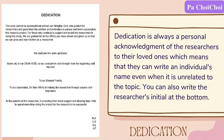The last lesson for the third quarter is lesson 5: the making of Chapter 2, or the Review of Related Literature. Literature refers to published materials for public use, such as books, magazines, encyclopedias, journals, and articles. Studies are unpublished and for personal use materials, such as theses, research papers, manuscripts, and dissertations.